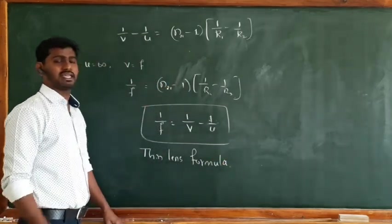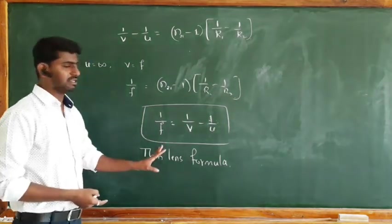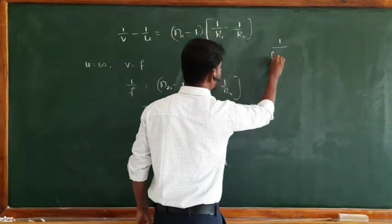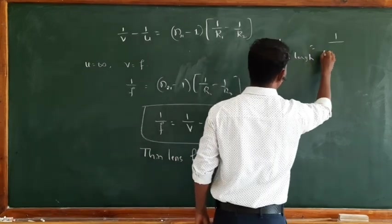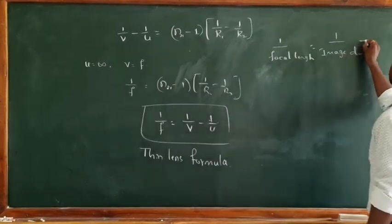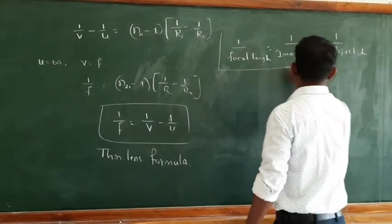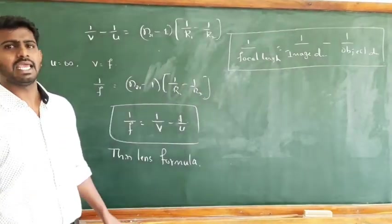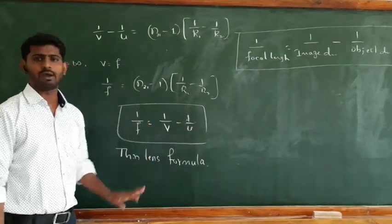You had a similar formula in the case of a mirror, known as the mirror formula. Here it is the thin lens formula. To remember it: 1 divided by focal length is equal to 1 divided by image distance minus 1 divided by object distance. That is, 1/f = 1/v minus 1/u.